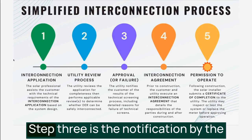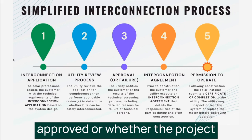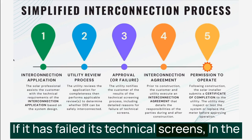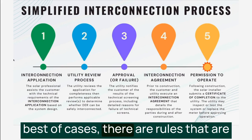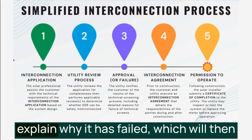Step three is the notification by the utility whether the project has been approved or whether the project has failed its technical screens. If it has failed its technical screens, in the best of cases there are rules on the books that require the utility to explain why it has failed.